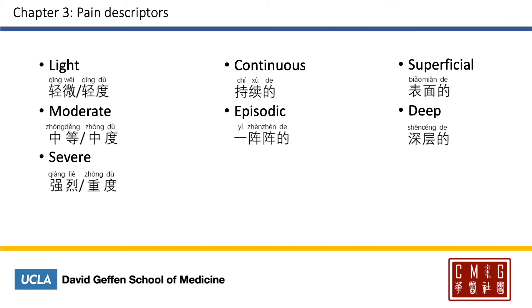To describe the severity of the pain, you may say light — 轻微 or 轻度; moderate — 中等 or 中度; and severe — 强烈 or 重度. Continuous will be 持续的, and episodic 一阵阵的 or 间歇的. Superficial is 表面 and deep is 深层.